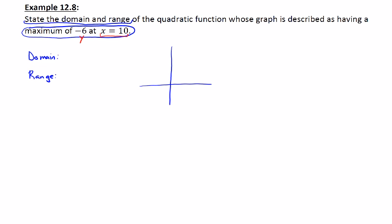Let me draw a picture. If I go out to where x is 10 and let me approximate here where I would say y is negative 6, there's supposed to be a point here at 10, negative 6.